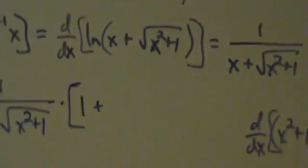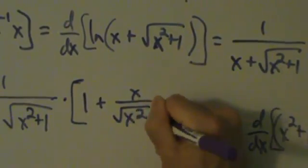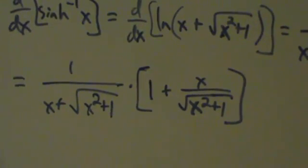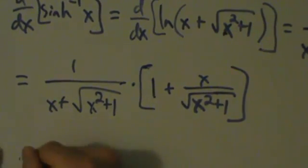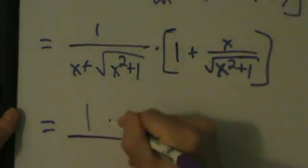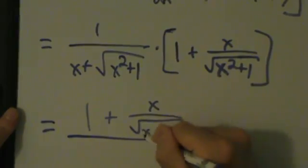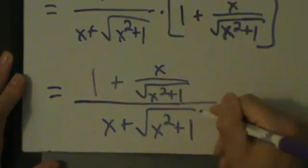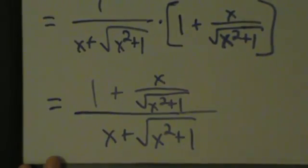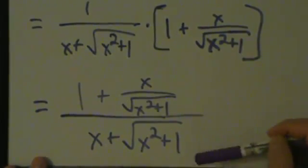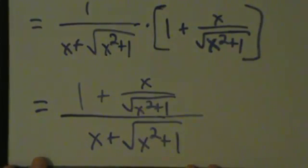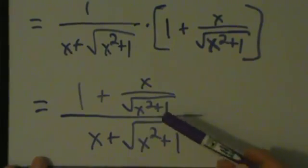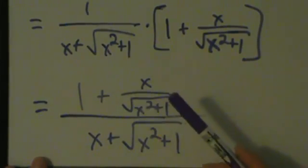Substituting that back in, we have 1 over (x plus root x²+1) times (1 plus x over root x²+1). So we've got 1 plus x over root x squared plus 1 on top, and x plus root x squared plus 1 on the bottom. This is a complex fraction — a fraction inside a bigger fraction. You might want to simplify that by getting a common denominator on top, and that would work, but it makes things a little more complicated later.